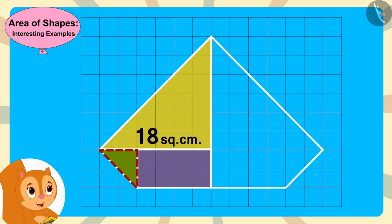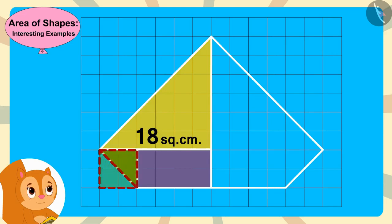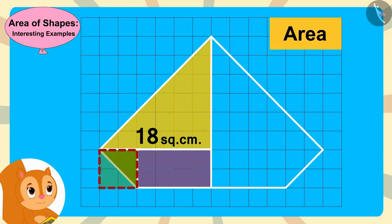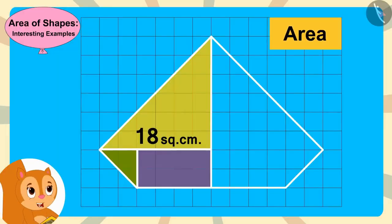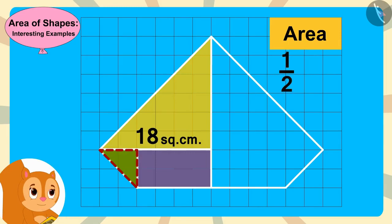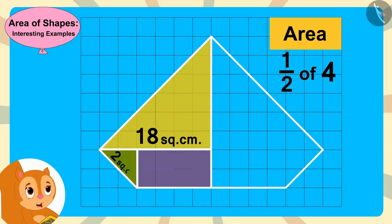This small triangle is half of this square. The area of the square is 2 times 2, or 4 square centimeters. So the area of this small triangle is half of 4, or 2 square centimeters.